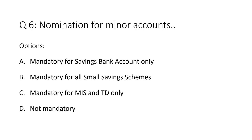Question 6: Nomination for minor accounts. Option A: mandatory for savings bank account only. Option B: mandatory for all small savings schemes. Option C: mandatory for MIS and TD only. Option D: not mandatory. The correct answer is Option B — mandatory for all small savings schemes, even if it is a minor account.